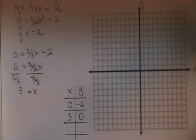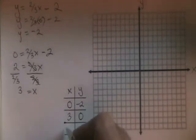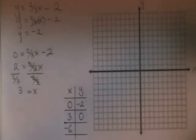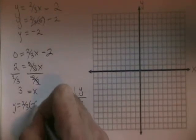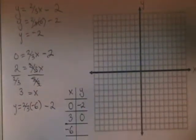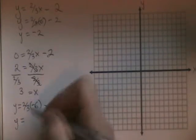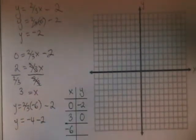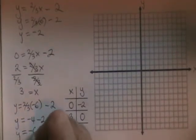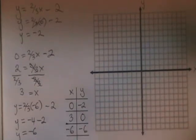Now we find a third point, and we can choose any number we want for either x or y. I'm going to try making x equal to negative six. If x equals negative six, the equation becomes y equals two-thirds times negative six minus two. Two-thirds times negative six is equal to negative four. So I have y equals negative four minus two, and y equals negative six. We have a third point: negative six, negative six.